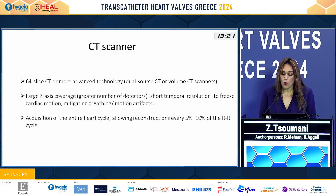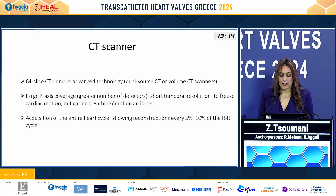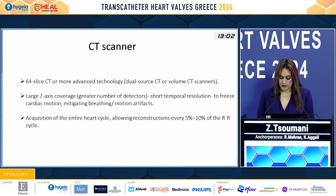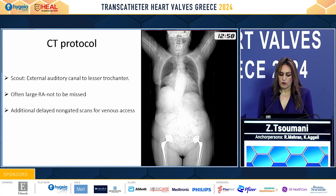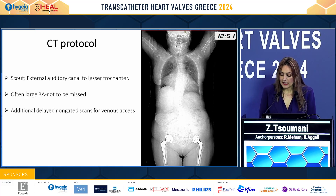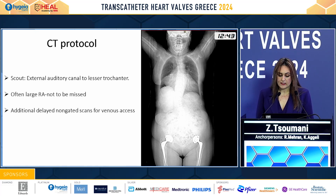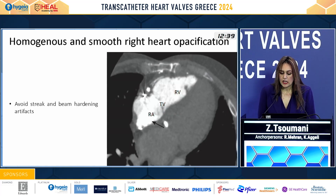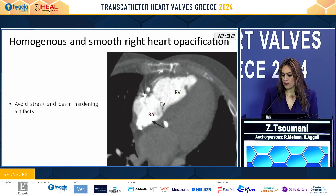To have all this information, we need at least a 64-slice CT or, ideally, a more advanced dual-source CT or volume CT scanner with larger z-axis coverage and shorter temporal resolution. We scan during the entire heart cycle so we can have reconstructions every five to ten percent of the RR cycle. The CT protocol involves an extended scout from the external auditory canal to the lesser trochanter, paying attention not to miss the often enlarged right atrium, and finishes with an additional delayed non-gated scan for venous access assessment.